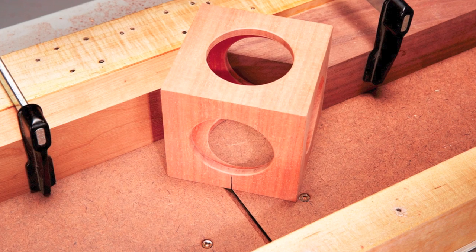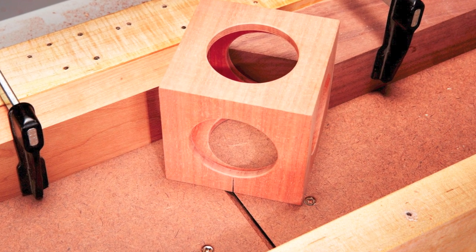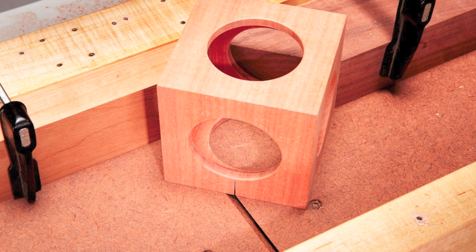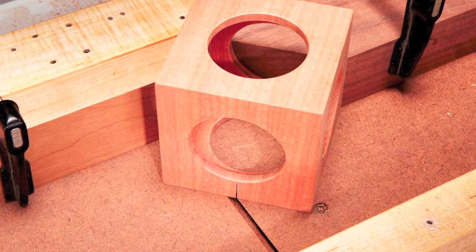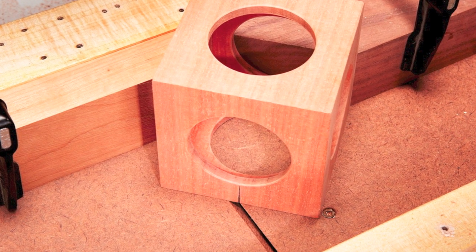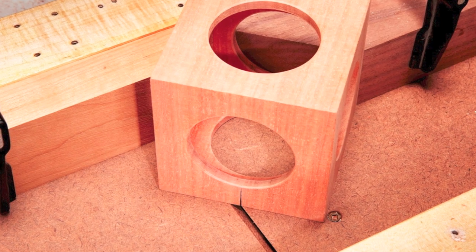Mark a center line on the cube, then adjust the support board side to side until the center line falls exactly on the left side of the sled's saw curve. The cube should also fit tight against both support boards.